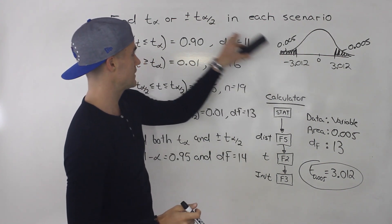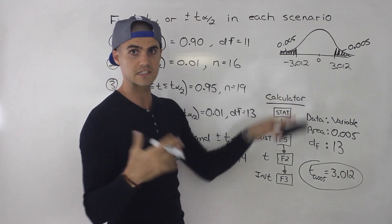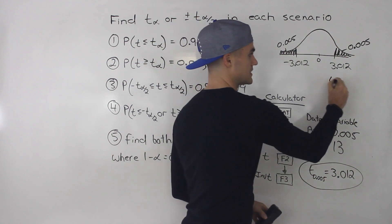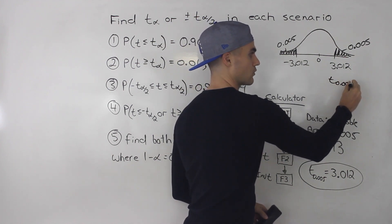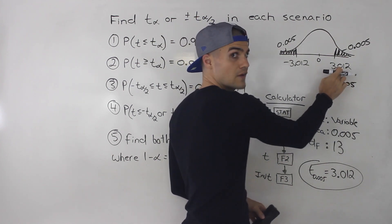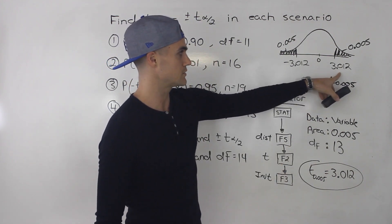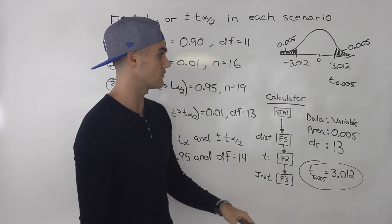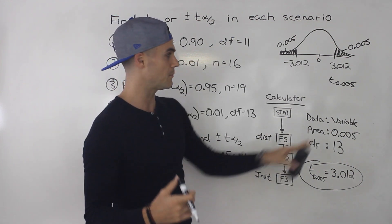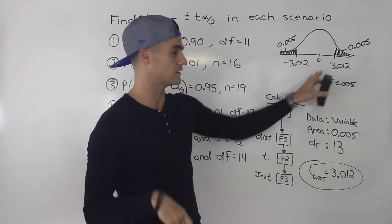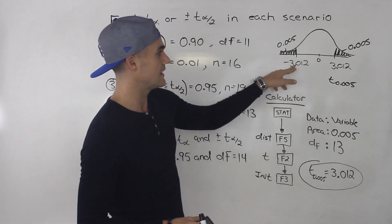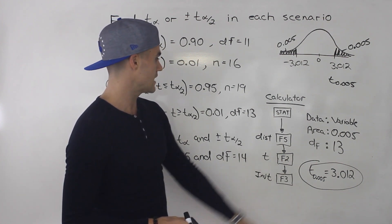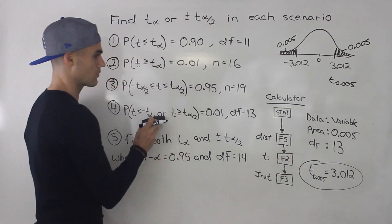You can also get these values from the t table. Look up degrees of freedom 13 and then t of 0.005 — you would get 3.012. The negative value is just the negative of that, since the t table only provides positive values. So plus or minus 3.012 is the answer to number four.